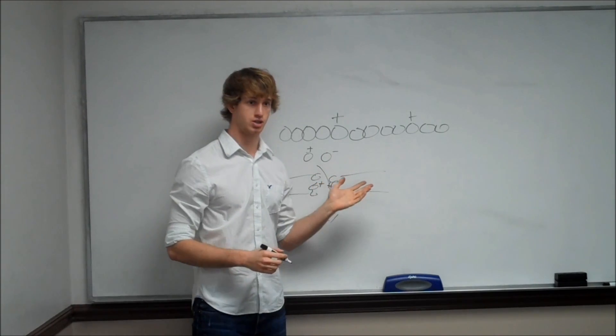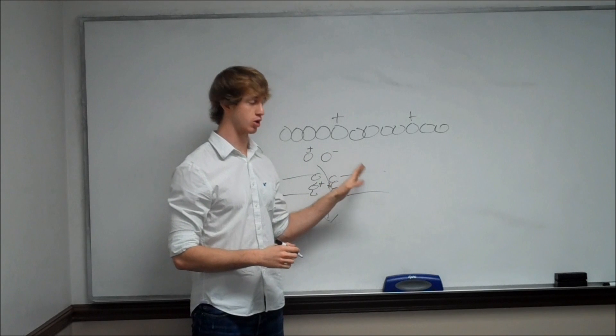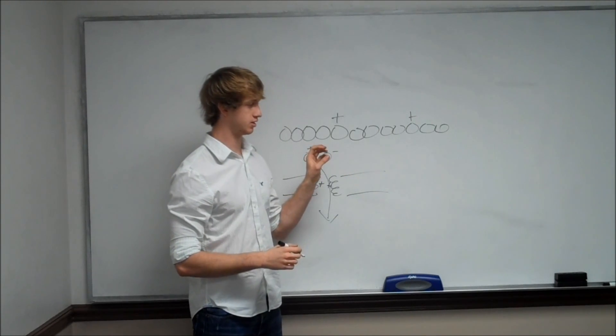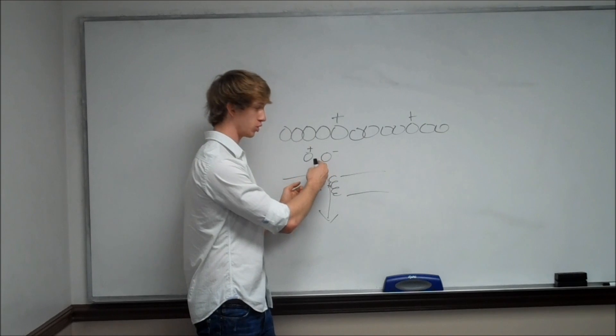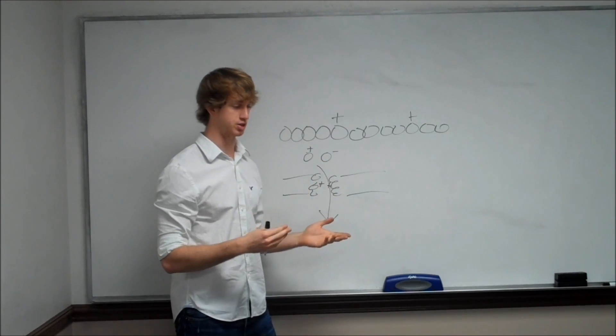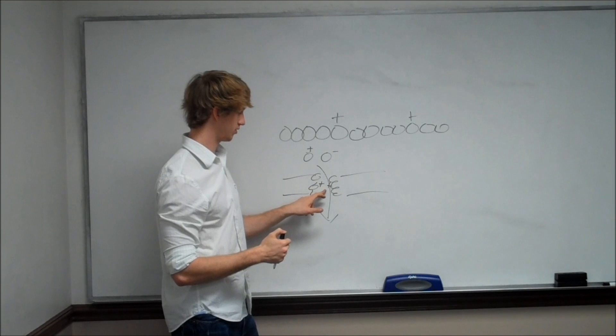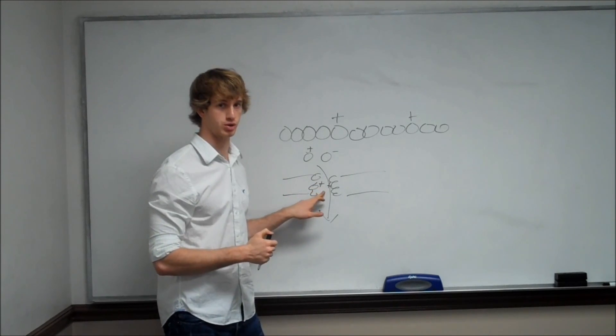What's one way we can test this? We can mutate these asparagine residues so that they are no longer polar, which means they won't be able to interact with this polar molecule, which means it will no longer function. And that's one way to test whether or not this is actually what these asparagine residues are doing.